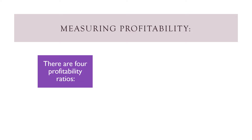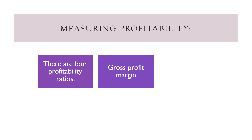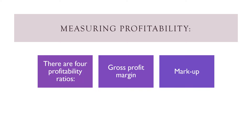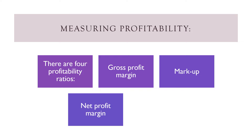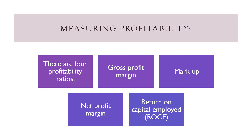There are four profitability ratios: gross profit margin, markup, net profit margin, and return on capital employed. We'll now go through each one of them in detail.